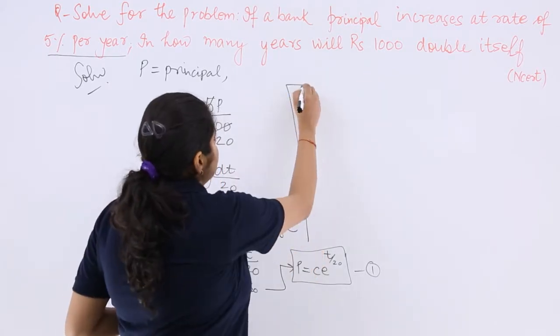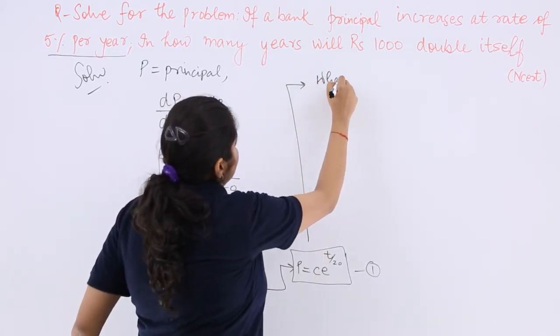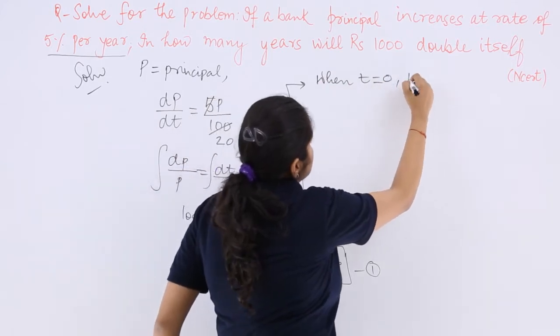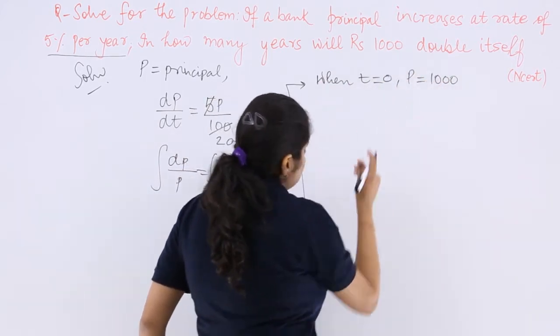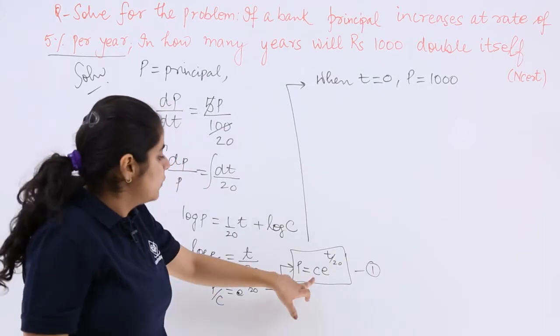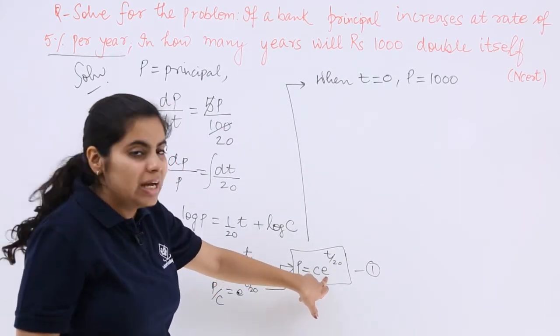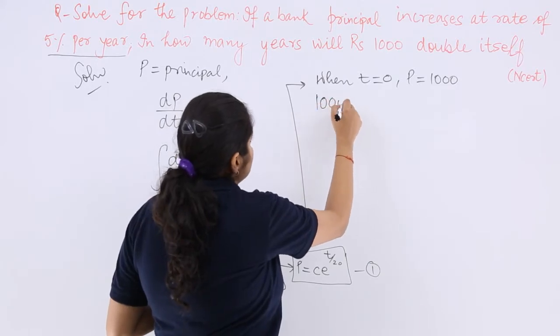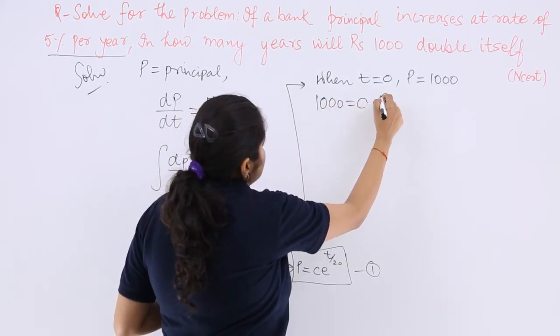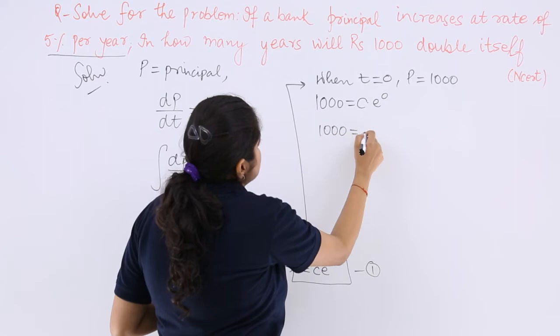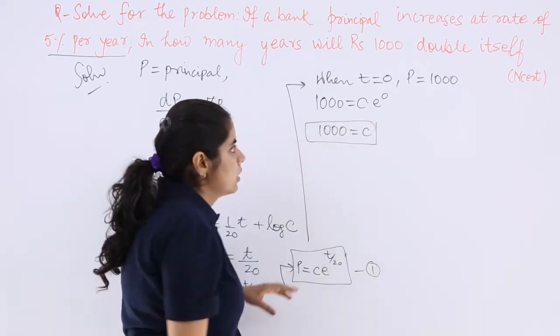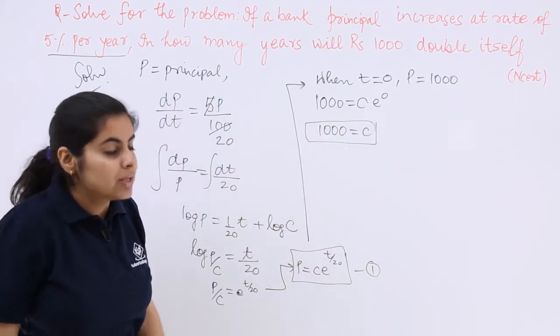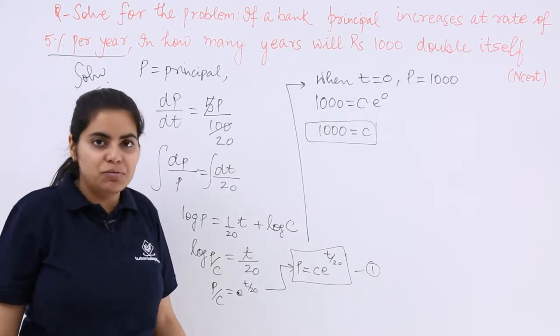So after here, we can write when my time frame is considered as 0, my P is 1000. So that means 1000 you put here equals C multiplied by e^0. So 1000 equals C multiplied by e^0. So 1000 equals C, because e^0 is 1. So 1000 equals C is the first thing.